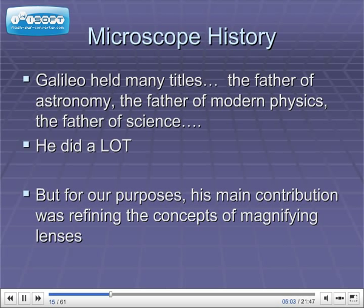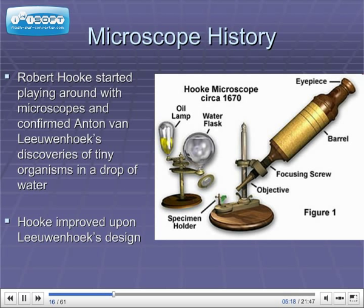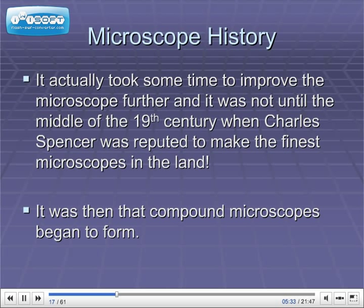Galileo held many titles: the father of astronomy, the father of modern physics, the father of science. But for our purposes, his main contribution was refining the concepts of magnifying lenses. Robert Hooke started playing around with microscopes and confirmed Anton van Leeuwenhoek's discoveries of tiny organisms in a drop of water. Hooke then improved upon Leeuwenhoek's design. It actually took some time to improve the microscope further, and it was not until the middle of the 19th century when Charles Spencer was reputed to make the finest microscopes in the land. It was then that compound microscopes began to form.